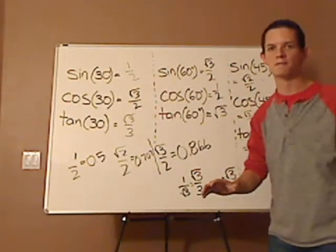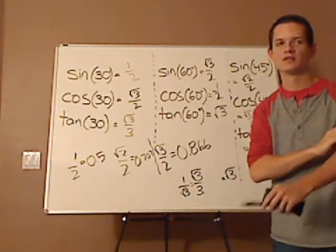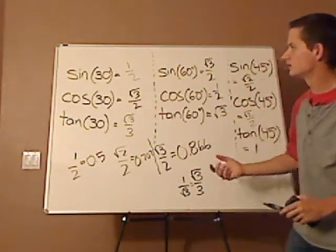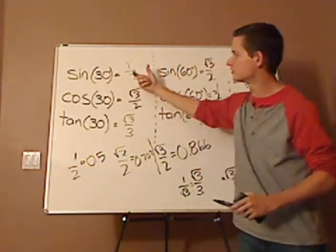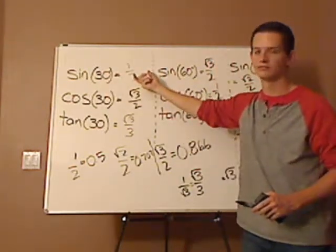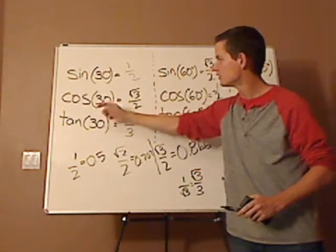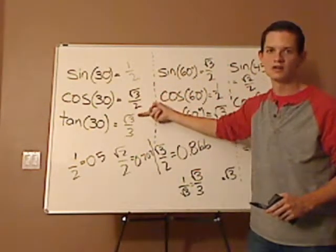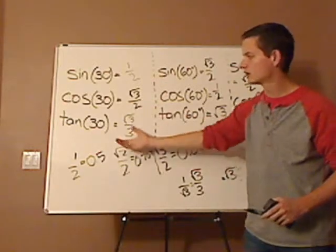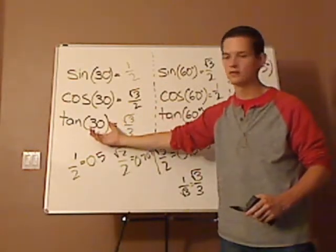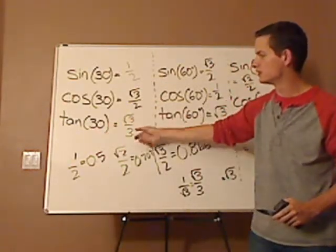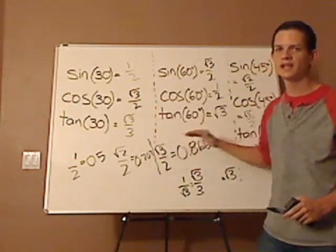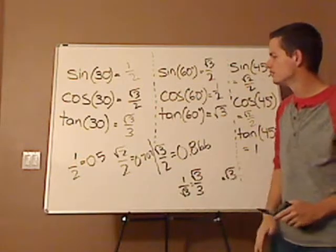Now the reciprocal functions: cosecant is just 2, you just flip it. Secant, you just flip it, so it's 2 over square root of 3. Cotangent of 30 degrees, you just flip it, so that would actually be square root of 3. Same thing with the other guys.